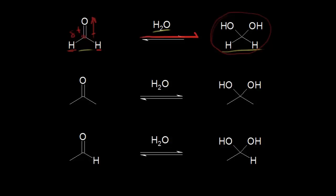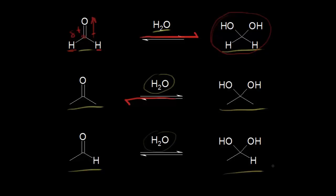If we look at the next reaction, we no longer have an aldehyde — this is a ketone, acetone. Adding water to acetone gives us the hydrate product, except ketones are not as reactive as aldehydes. This time, the equilibrium is to the left — it favors formation of the ketone. Next is acetaldehyde. Adding water to acetaldehyde gives this hydrate product. These reactions occur because the carbonyl carbon is partially positive — the oxygen withdraws electron density. We could make aldehydes or ketones more reactive by adding something that further withdraws electron density from that carbonyl carbon.